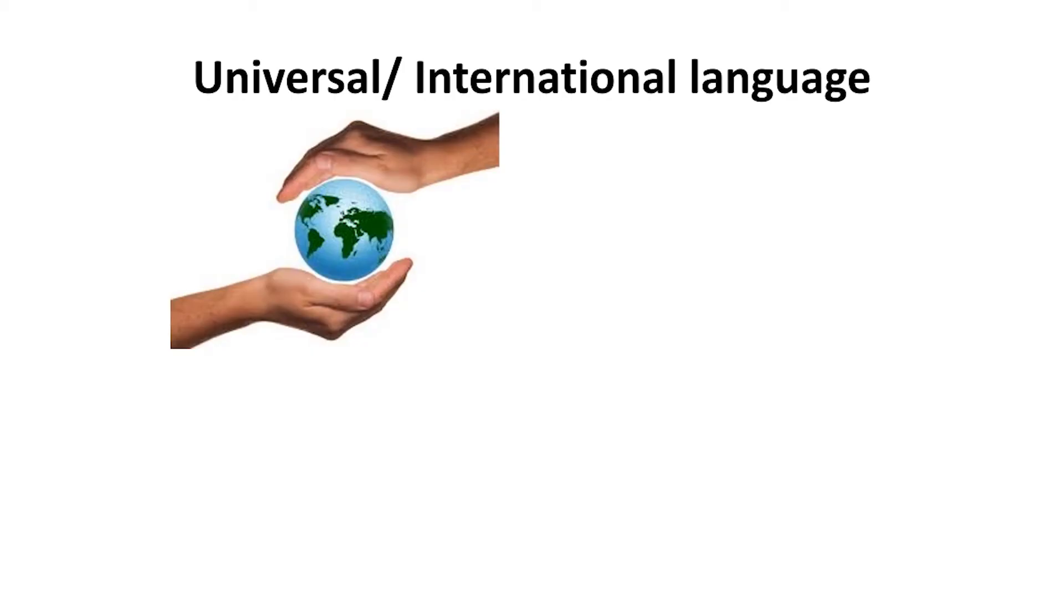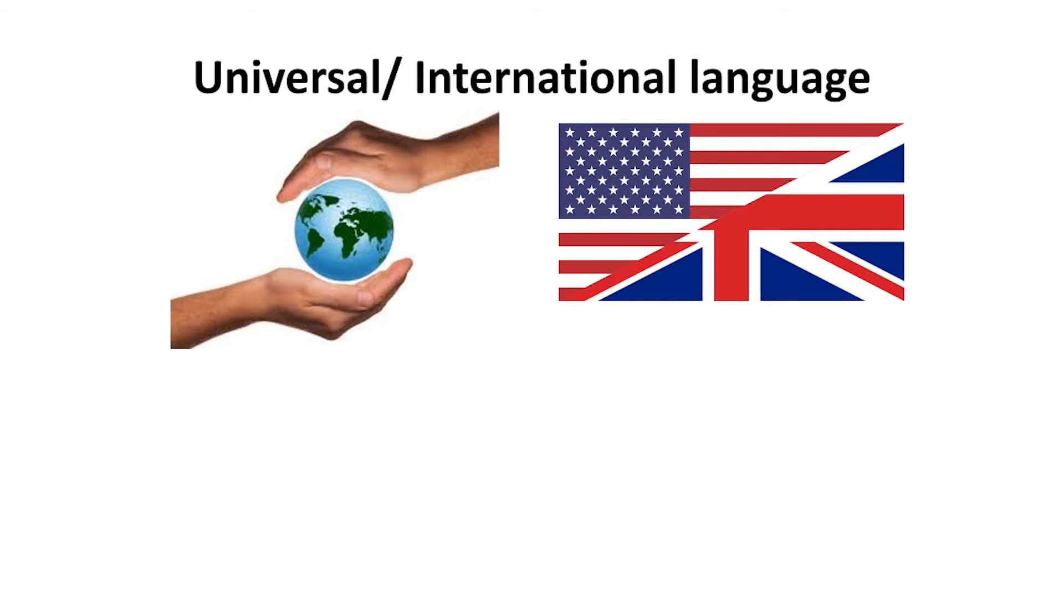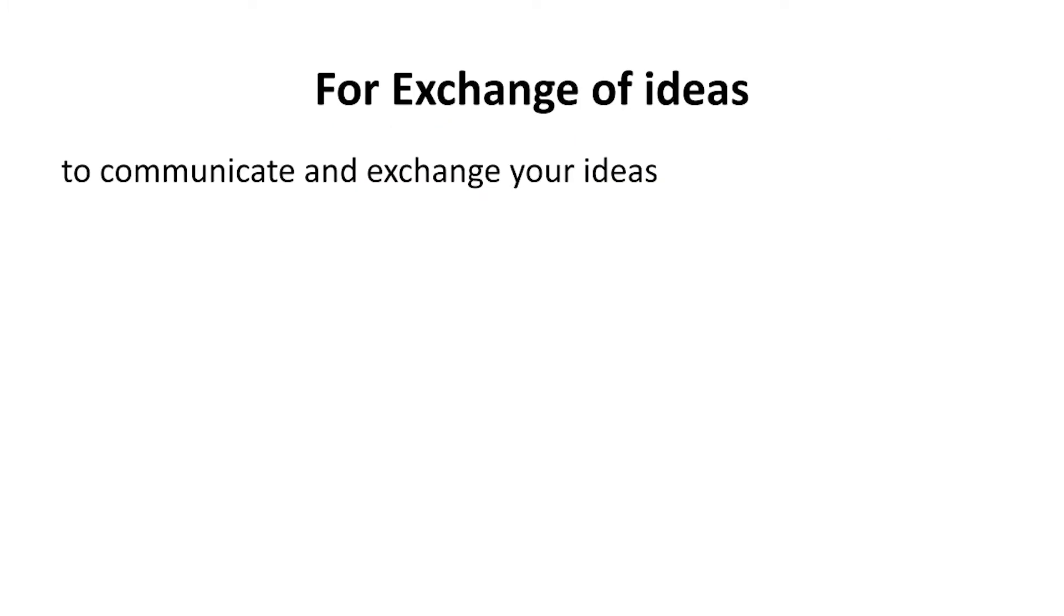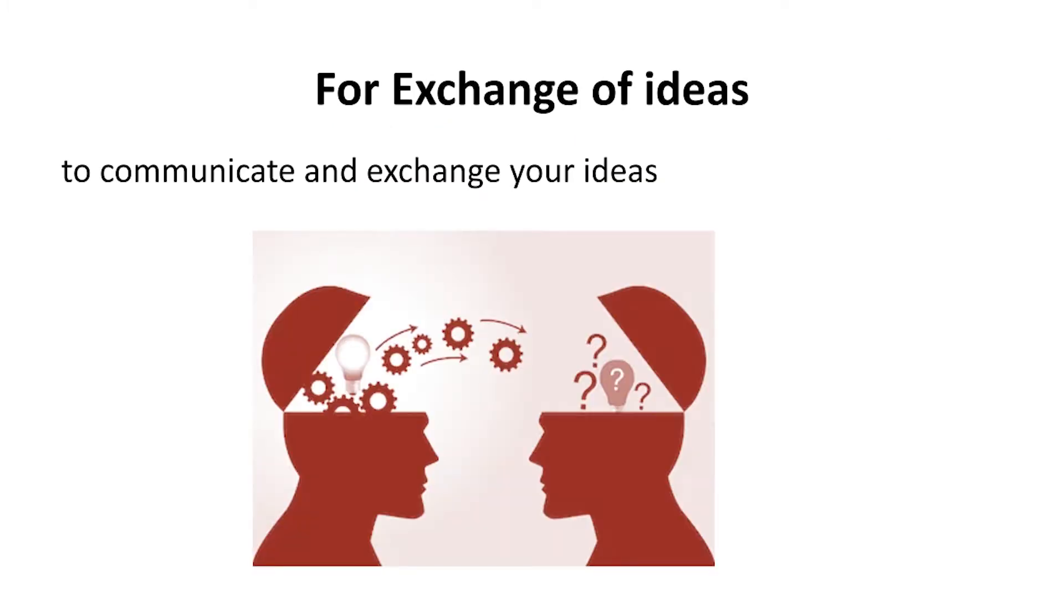Now we will begin this module with the focus on the importance of English in academic writing. So why English? English is a foreign language, English is an international language, English is the global language. As most of the journals are in English, it is crucial for every researcher or every academician to learn effective writing. We need English for exchange of ideas. English is needed to communicate and exchange your ideas with international experts.